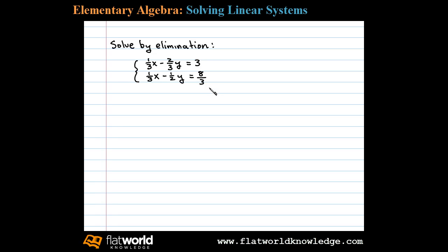Here we're asked to solve a linear system by elimination. Let's begin by clearing the fractions. We can clear the fractions in the first equation if we multiply both sides by 3. That'll leave us with x minus 2y equals 9.